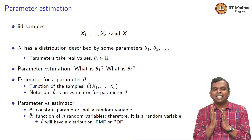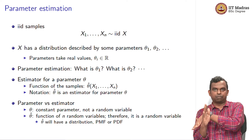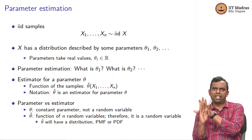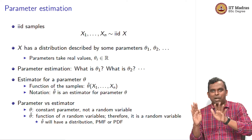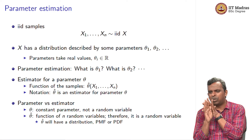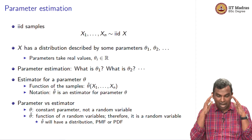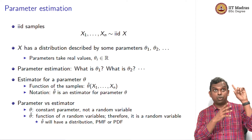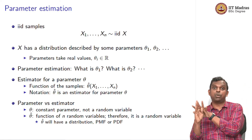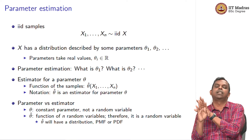Even though theta hat has a distribution, we are expecting it will take values around theta. Theta is some fixed value, theta hat is a random variable with a distribution — a PDF or PMF. You are imagining that if theta is here, theta hat will always be somewhere around theta. You cannot have theta hat being some random thing independent of theta. You are hoping to design a theta hat — design a function — so that its distribution is concentrated and gives you values around theta in some predictable way, so you can give some guarantees on that.